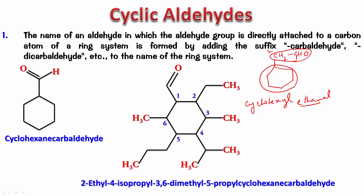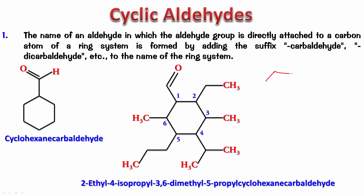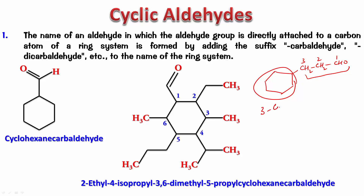When I say cyclohexyl ethanal, it means I draw ethanal and place the cyclohexyl group on carbon two — I cannot place it on the aldehyde carbon. However, if the chain has more carbons, for example CH₂–CH₂–CH₂–CHO, I need to specify where the cyclohexyl group is. Numbering from the aldehyde carbon: one, two, three — so it becomes 3-cyclohexyl propanal. We don't say 1-propanal because the aldehyde is always a chain-terminating functional group and we always start numbering from it.